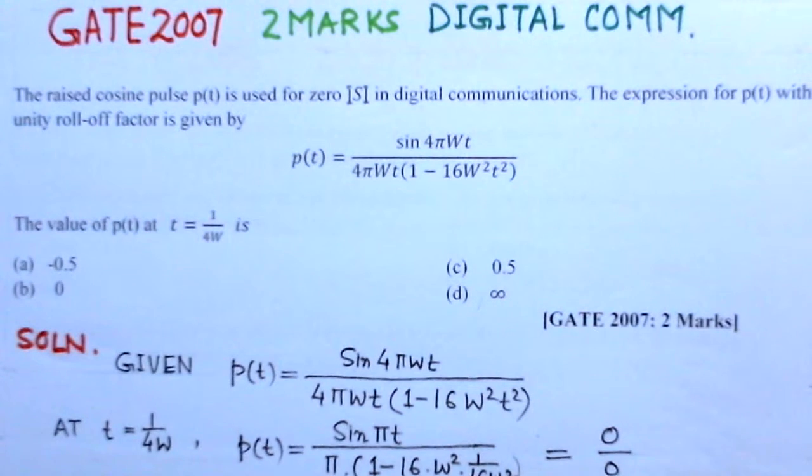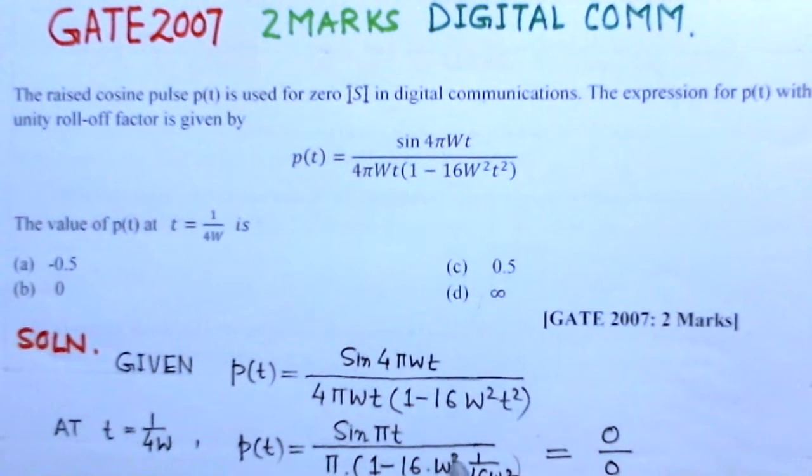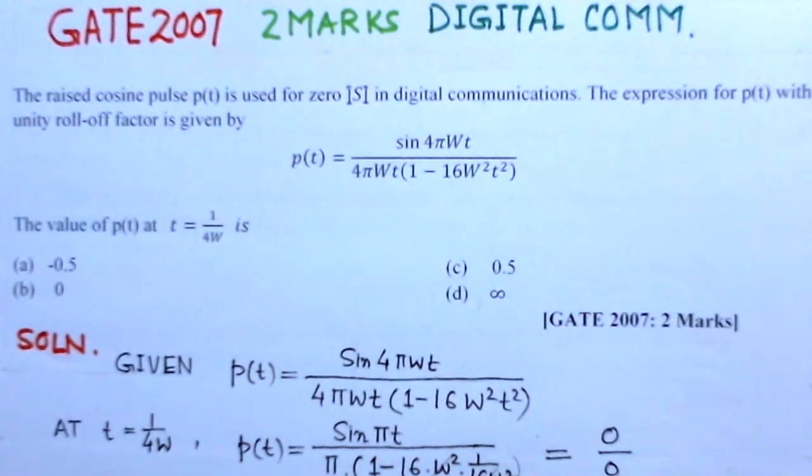And the expression, this also will cancel out here. So you will get this 1 minus 1 will be, it is of the form 0 by 0. If this is of 0 by 0, we cannot evaluate this expression.